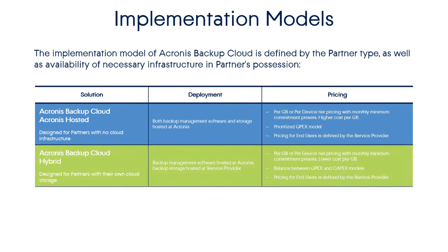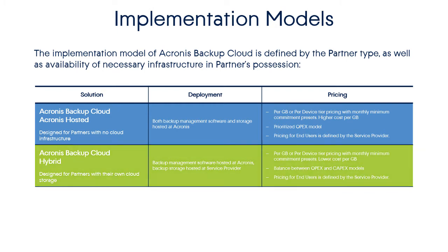The second model is the Acronis Backup Cloud hybrid model. It's designed for partners who have their own cloud storage. In this case, the backup management software is hosted at Acronis, whereas the backup storage is hosted at the service provider. The pricing model is similar to the Acronis hosted model. The major difference is that in the case of the hybrid model, the costs per gigabyte are lower. This model is most beneficial for partners who are looking for a balance between OPEX and CAPEX models. The pricing for end users is still defined by the service provider.